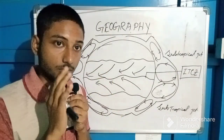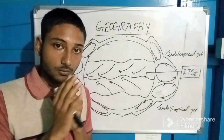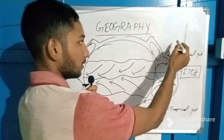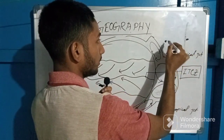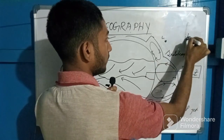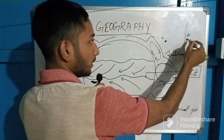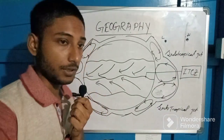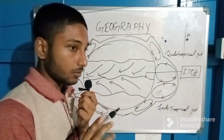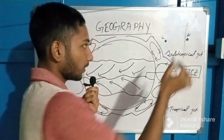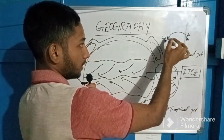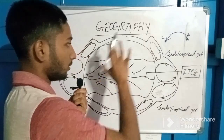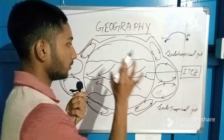To understand the ITCZ, you first have to understand one concept: let's say here is a high pressure area and here is a low pressure area. Air always flows from high pressure towards low pressure. You have to understand and remember this concept throughout the entire video in order to understand the ITCZ.